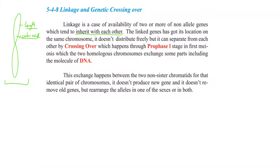The linked gene has its location on the same chromosome, so it doesn't distribute freely like the law of independent assortment of Mendel. But it can separate from each other by crossing over, which happens during prophase one of meiosis one, when two homologous chromosomes exchange some parts including molecules of DNA — another definition for crossing over. This exchange happens between two non-sister chromatids of that identical pair of chromosomes. It does not produce new genes, does not remove all genes, but rearranges the alleles in one or both sexes during gamete formation.